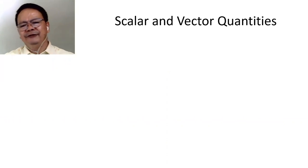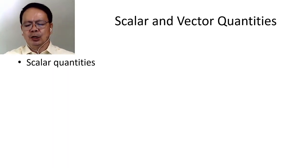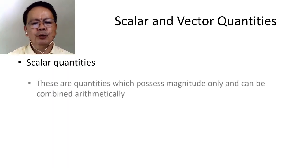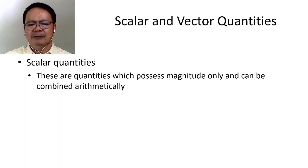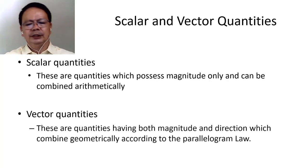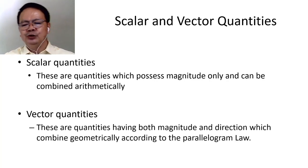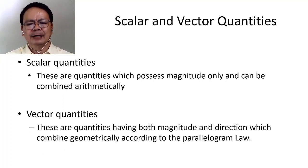Let us discuss the difference between a scalar and a vector quantity. Scalar quantities possess magnitude only and can be combined arithmetically. Vector quantities have both magnitude and direction and combine geometrically according to the parallelogram law.